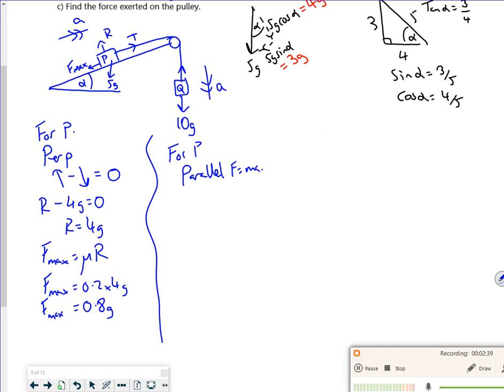Now let's just set up the equations. For P if I look parallel using F equals ma, I've got the force in the direction of travel minus the force opposing it equals mass times acceleration. The force in the direction of travel is T. The force opposing it - there's two of them: F_max which is 0.8g and also 5g sine alpha which has become 3g. That equals a mass of 5 times acceleration.